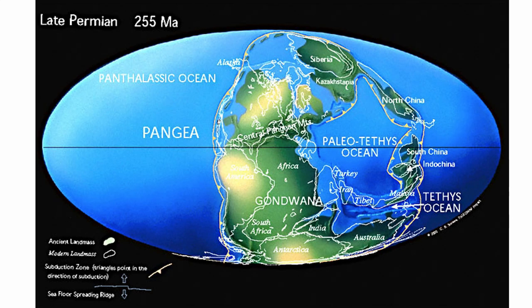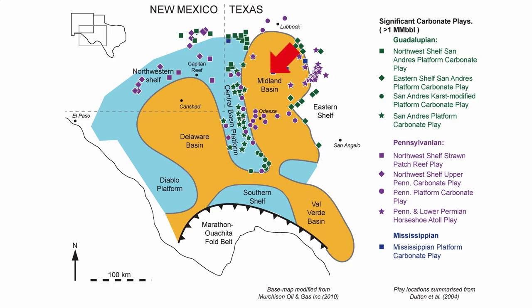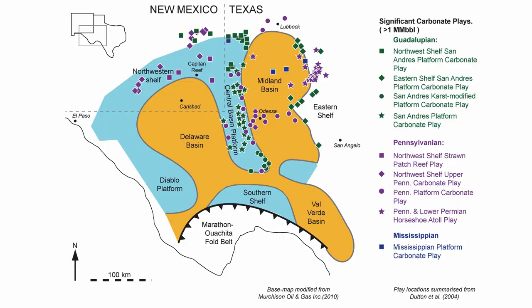In the late Permian, we still had the supercontinent Pangaea, and the ocean surrounding Pangaea is known as the Panthalassic Ocean. Our location was on the western margin of Pangaea — a shallow water location where we had tectonic subsidence and the formation of three mini basins: the Midland Basin, currently in the subsurface where you find all the oil and gas; the Delaware Basin, partially in the subsurface but also partially exposed — I'm standing on the edge of the Delaware Basin here at outcrop; and the Oro Grande Basin in Mexico.